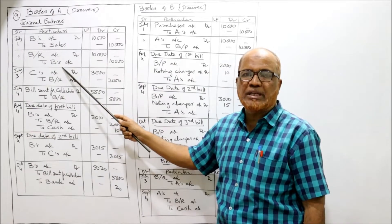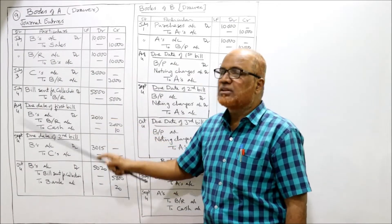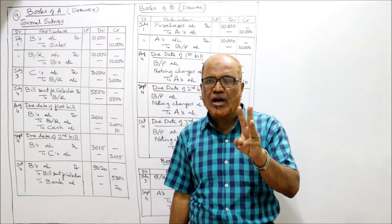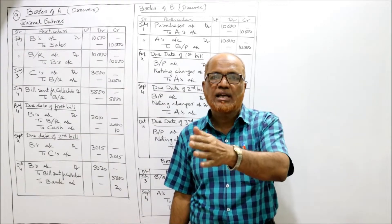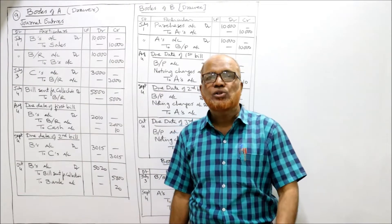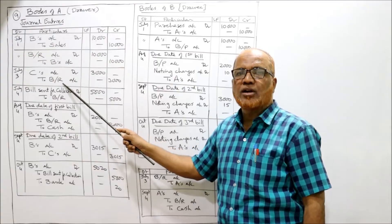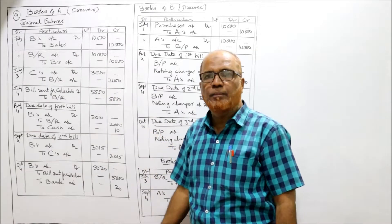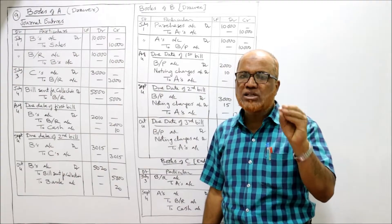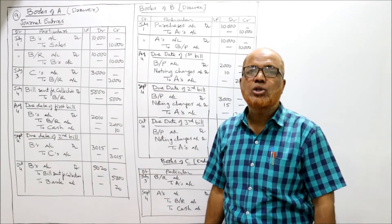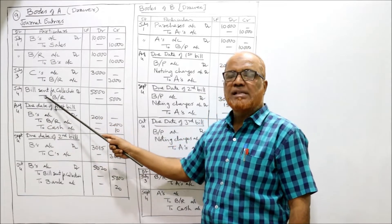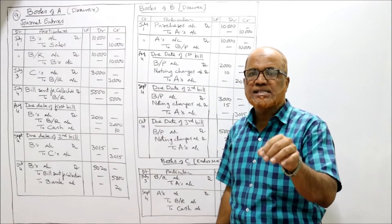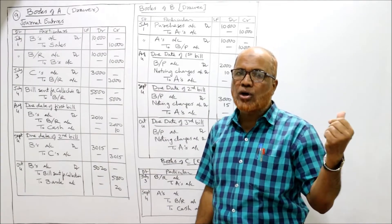Bills receivable account debit to B's account, being the three bills received for rupees 2,000, 3,000 and 5,000. On third July, A endorsed the second bill to C. The third bill worth 5,000 is sent to bank for collection on July 4th. The first bill is kept with A himself, the second bill is endorsed in favor of C, and the third bill is sent to bank for collection.